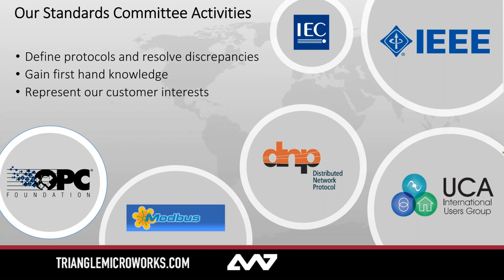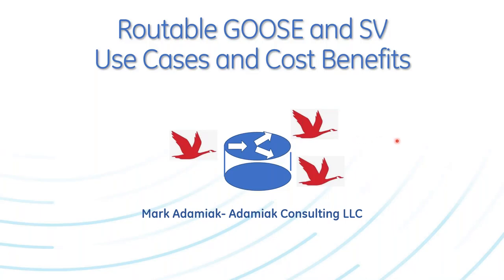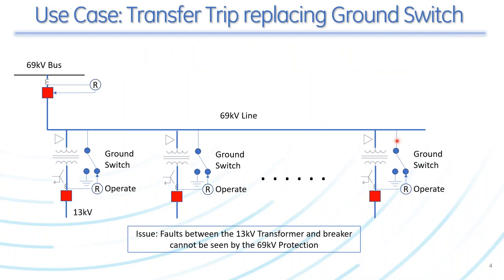Thank you, Beth, and good morning everybody online. We're going to start off by looking at use cases. You may have heard of these terms routable GOOSE and routable sampled values. We're going to look at what are called use cases for the development of these protocols, or these profiles as they are referred to in IEC 61850. These use cases, most of which are actually in service, and one or two could become in service.